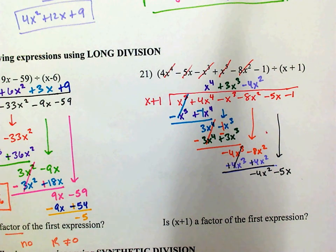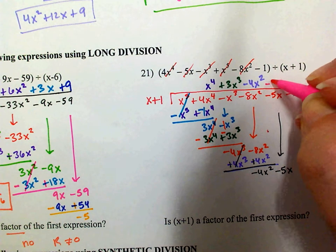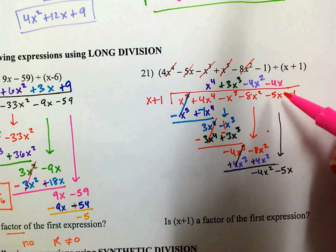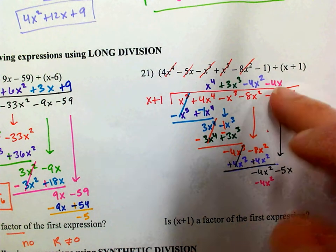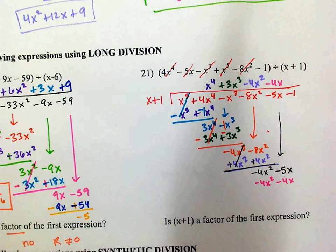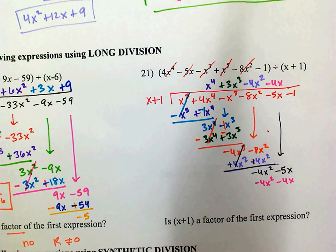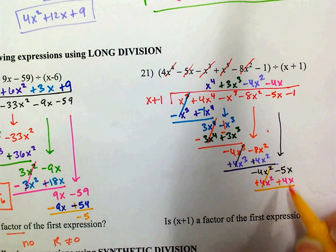I need negative 4x squared and I've got positive x, so I need negative 4x. Negative 4x times x gives negative 4x squared. Negative 4x times 1 is negative 4x. Subtract — change the signs to plus. Those cancel out and I'm left with negative 1x. Bring down the negative 1.